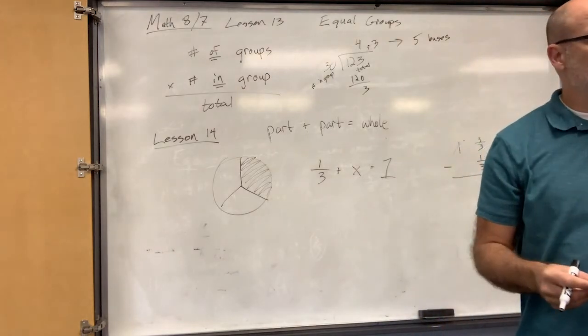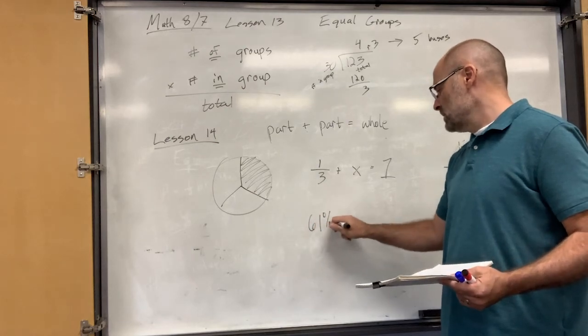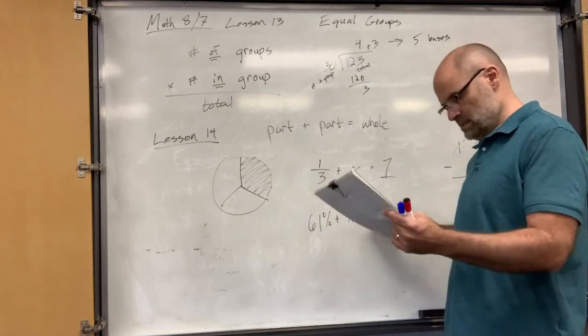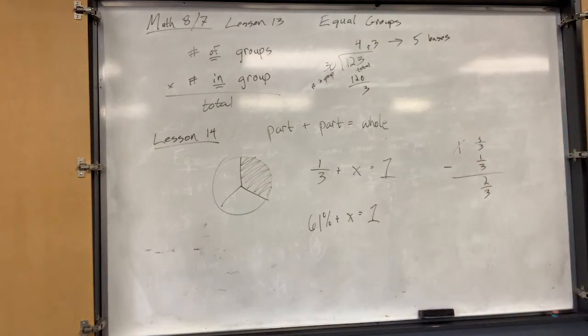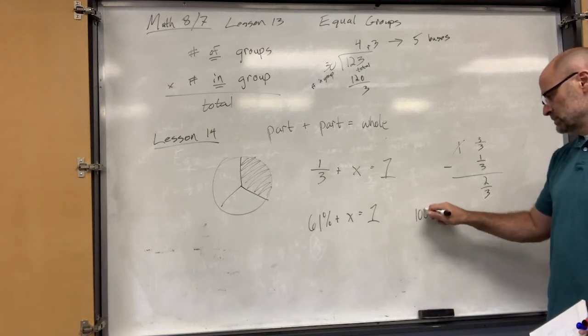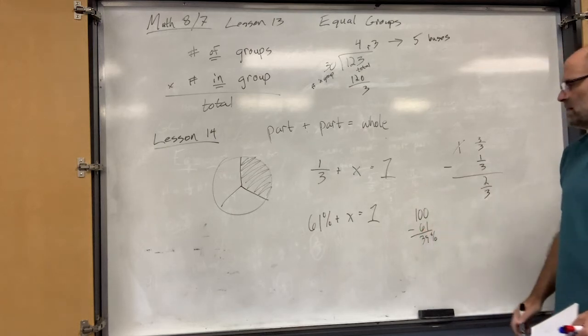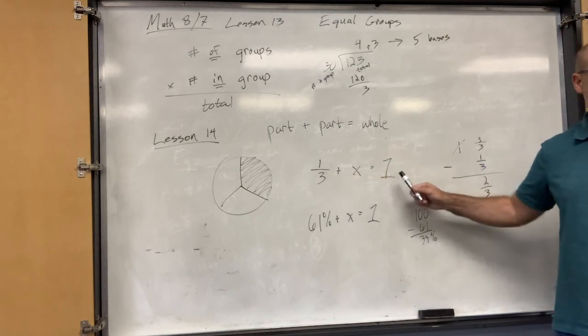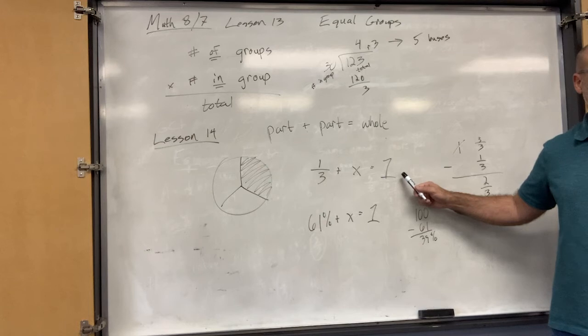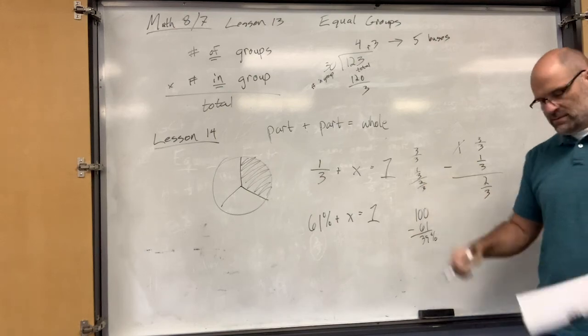You guys feel okay about that? Yeah. All right. One more, and then we're done. Okay? 61% plus x equals one. What does one mean in percent language? 100%. So what's the answer? 39. Okay. So 39%. You could do the same thing. What's one in thirds language? How many thirds is one whole? Three. Three thirds. So three thirds minus one third is two thirds. Okay?